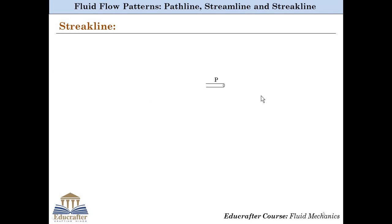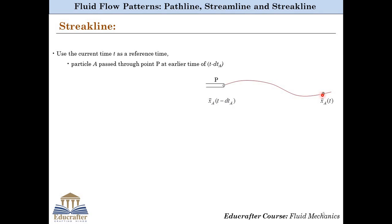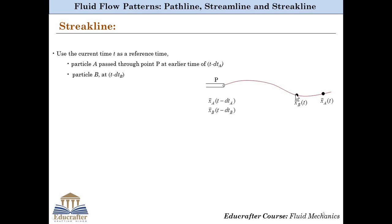Now moving to a streakline — consider some fluid flow in a 3D space. At the current instant of time t, particle A is found to be at a certain position in the flow field. But this particle had earlier passed through a point P in the domain at some earlier instant of time, say t minus dtA. Similarly, another fluid particle named B is currently at another location, which also passed through point P at some earlier instant of time, say t minus dtB.